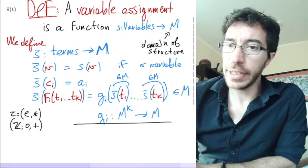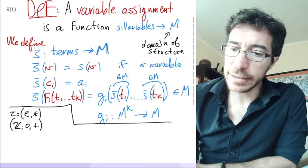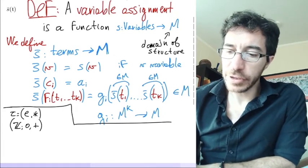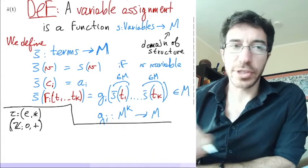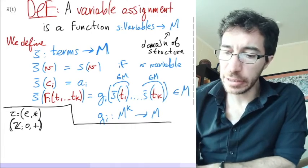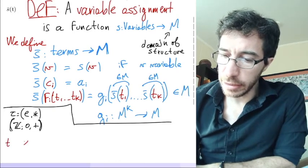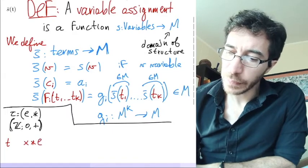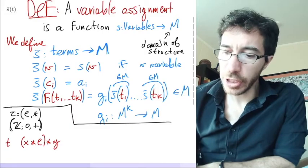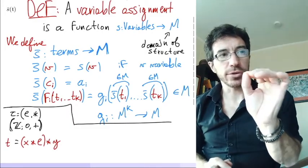Okay, so let's look at this example. In this example we have a vocabulary tau, vocabulary of groups, the same as before, and we have the structure of the integers with zero and plus. And now let's build a term. So a term t is going to be, let's say, x star e star y.